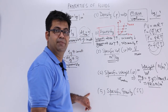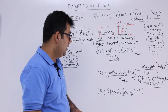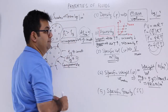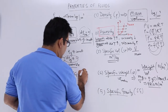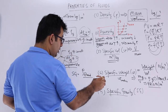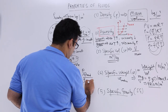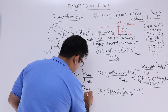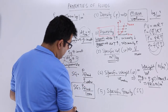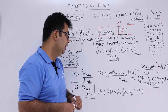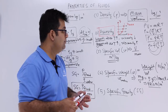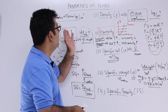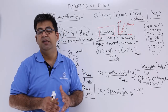The last property is specific gravity. Specific gravity is the ratio between the density of a given fluid and the density of a standard fluid — which is water in this case. You can write specific gravity as density of fluid upon density of water, or density of fluid upon 1000. That is the formula to find the specific gravity for a fluid, whether it's a liquid or a gas. This finishes the video on the properties of fluids.